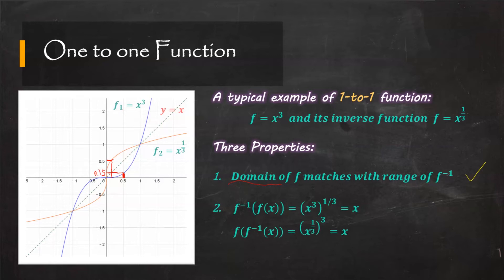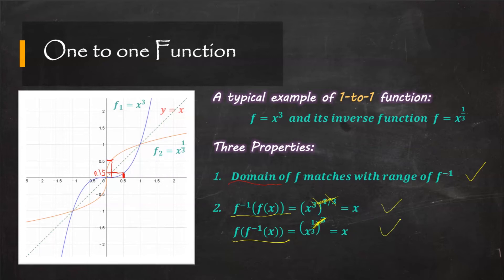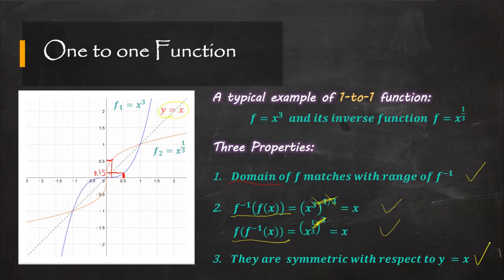For the second property, f⁻¹(f(x)) = (x³)^(1/3) — cross this out and it gives x. And f(f⁻¹(x)) = (x^(1/3))³ — those two cancel out, also giving x. So both equations are valid. For the last property, the two curves are symmetric with respect to y = x — the dashed line here acts like a mirror, and they do look symmetric. This is a very typical example.